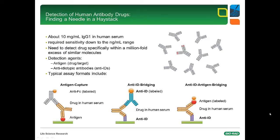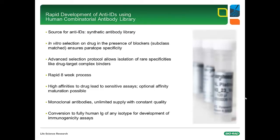In the coming slides I will explain how ABD-Serrotec develops anti-idiotypic antibodies. ABD-Serrotec uses a synthetic antibody library as source for anti-idiotypic antibodies. This library is used in vitro for selection of any specificity without involving animals. During the selection on an antigen, other substances can be added as blockers to avoid selection of unwanted specificities. In the case of anti-idiotypic antibodies, subclass matched antibodies are added as blockers, thereby avoiding enrichment of specificity that bind to other regions of the antibody drug. The selection protocol can be fine-tuned in order to identify antibodies that bind to the drug when complexed with its target. Such specificities are useful for quantification of total drug as opposed to free drug levels.